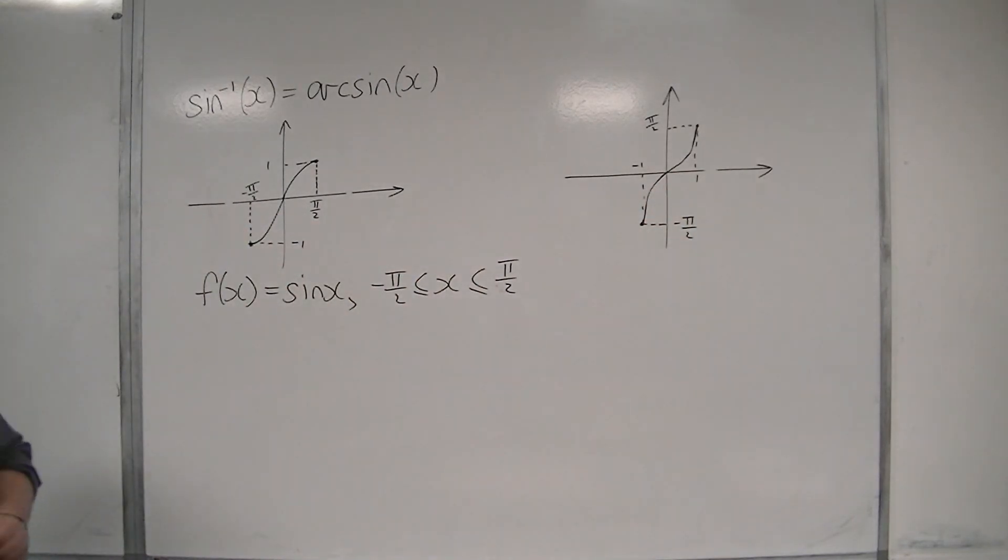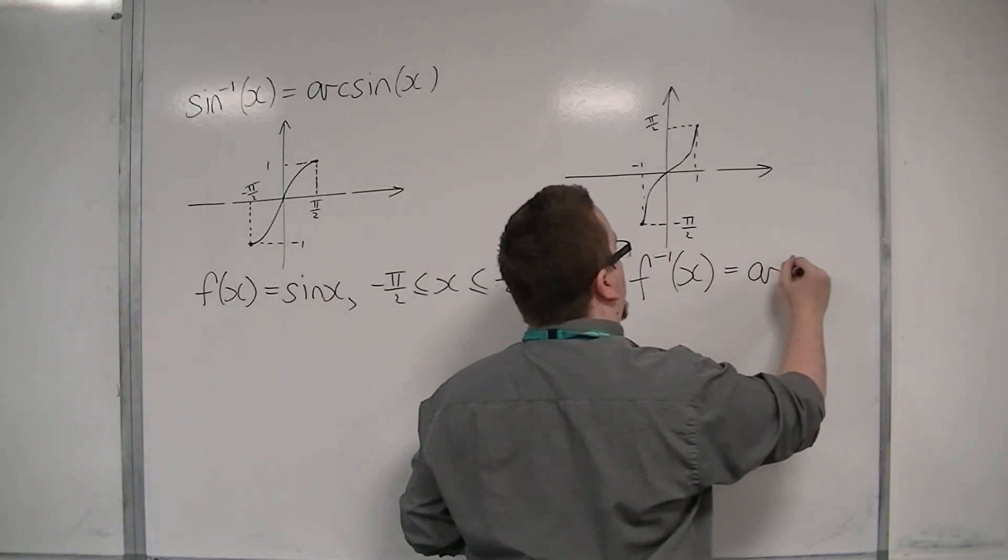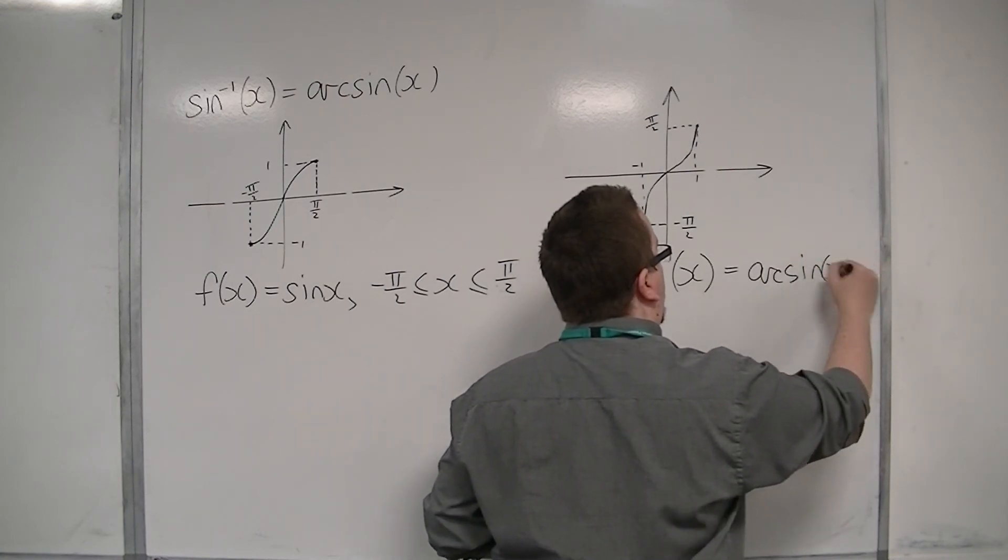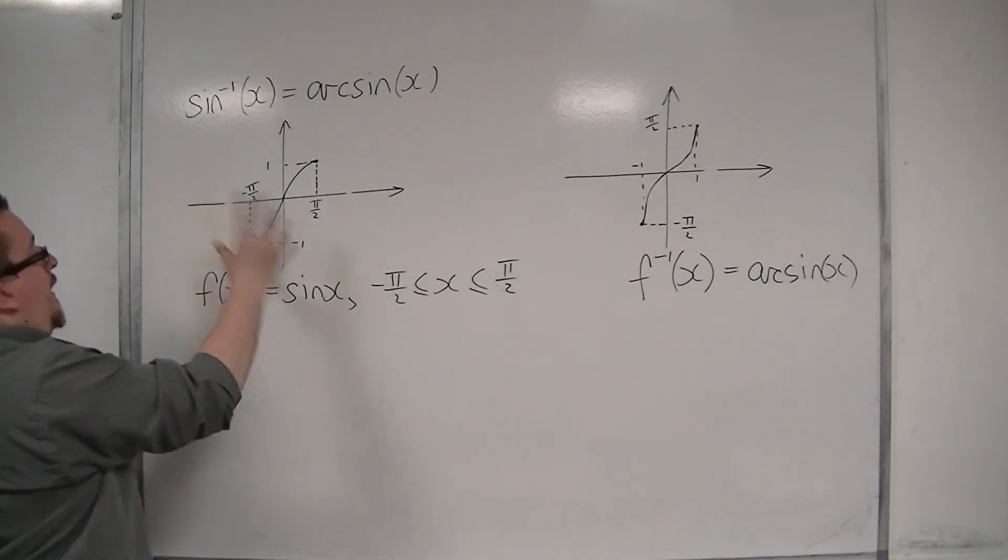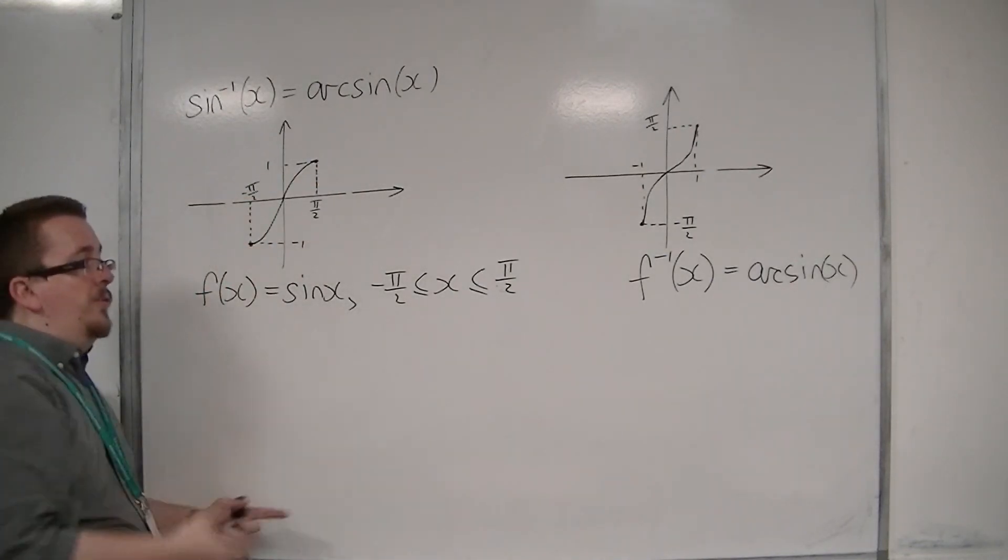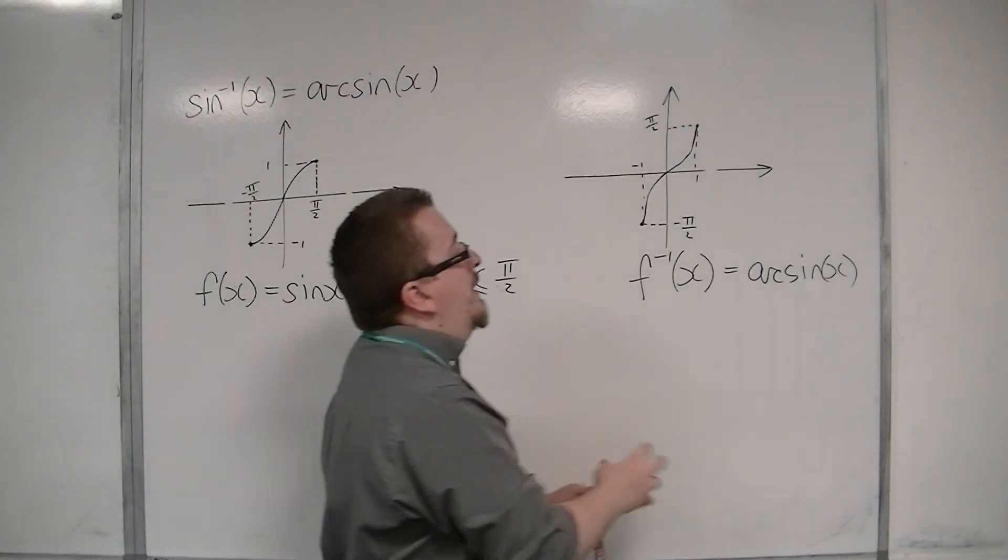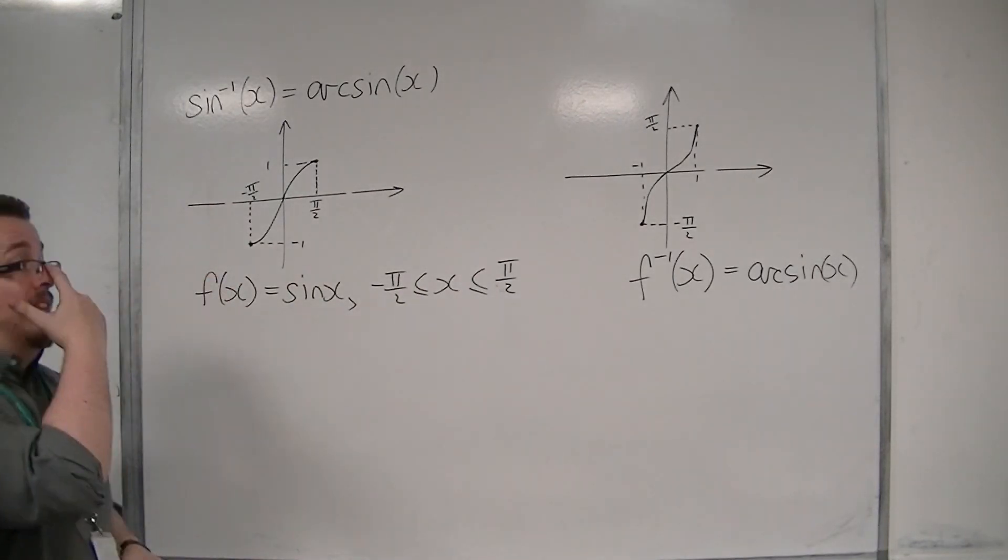So that is what f⁻¹(x) = arcsin(x) looks like. It's like sine x between -π/2 and π/2, but it's been reflected in the line y = x. And so it looks like that.